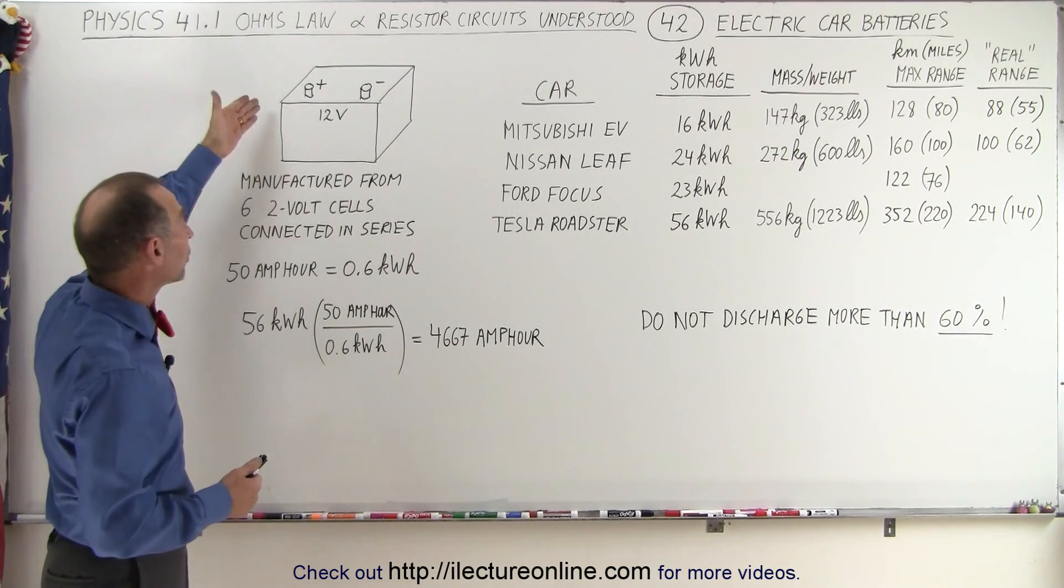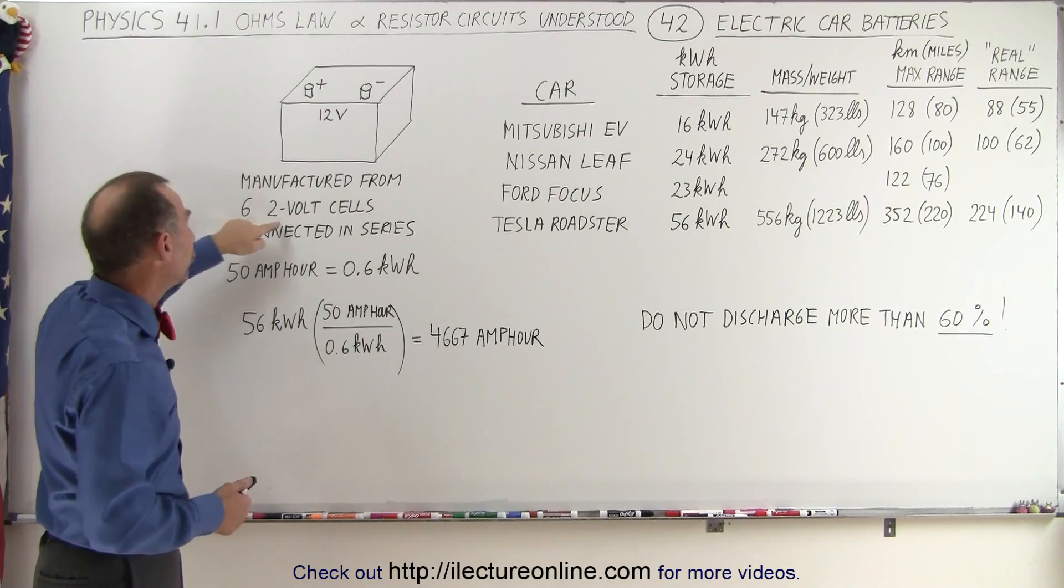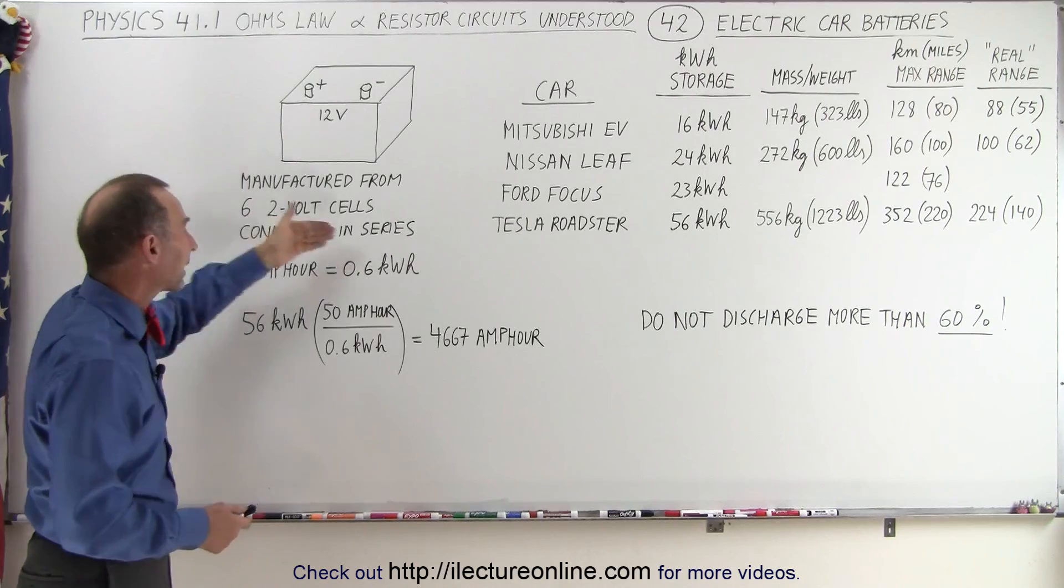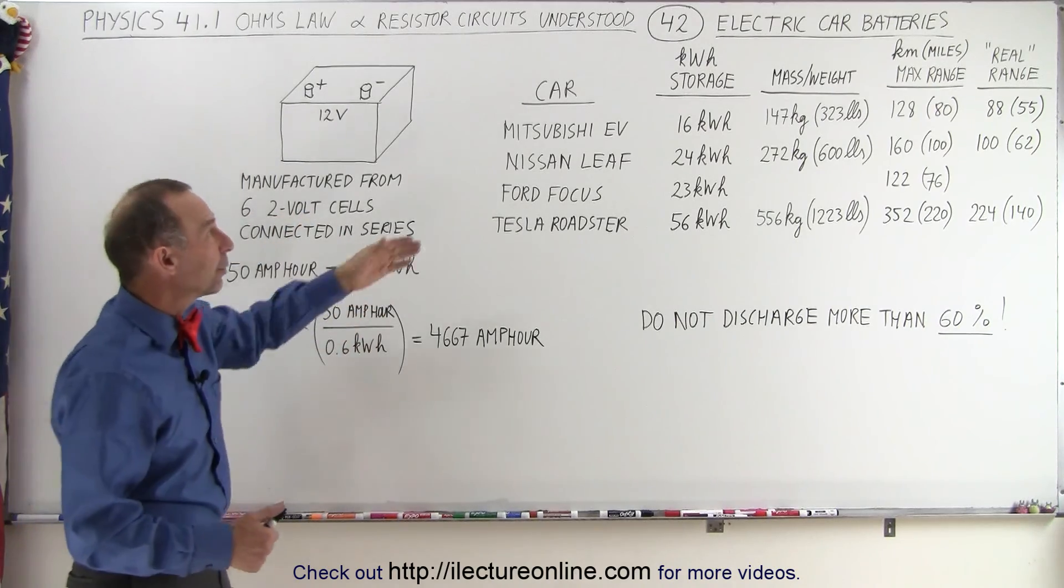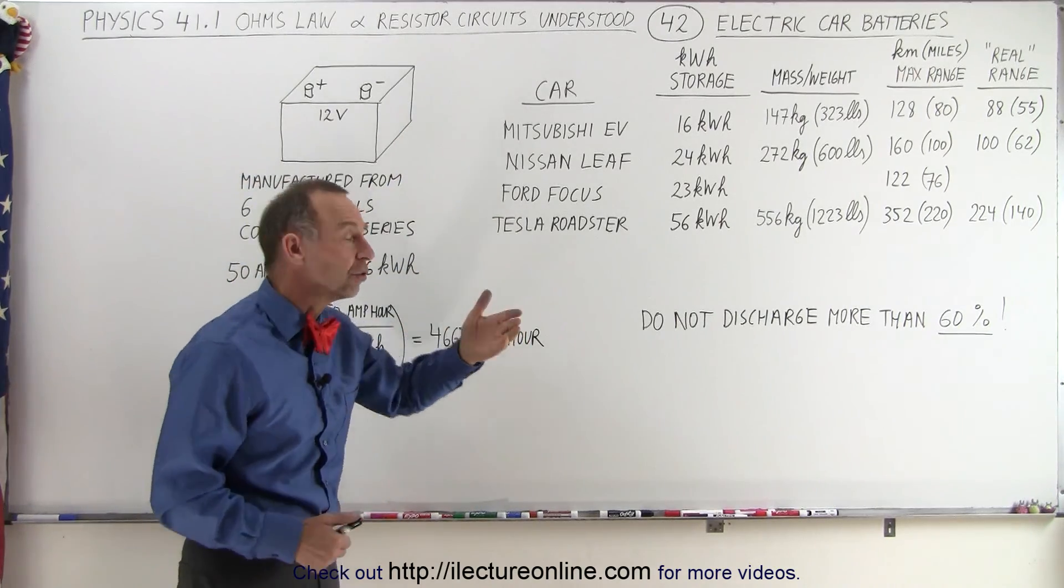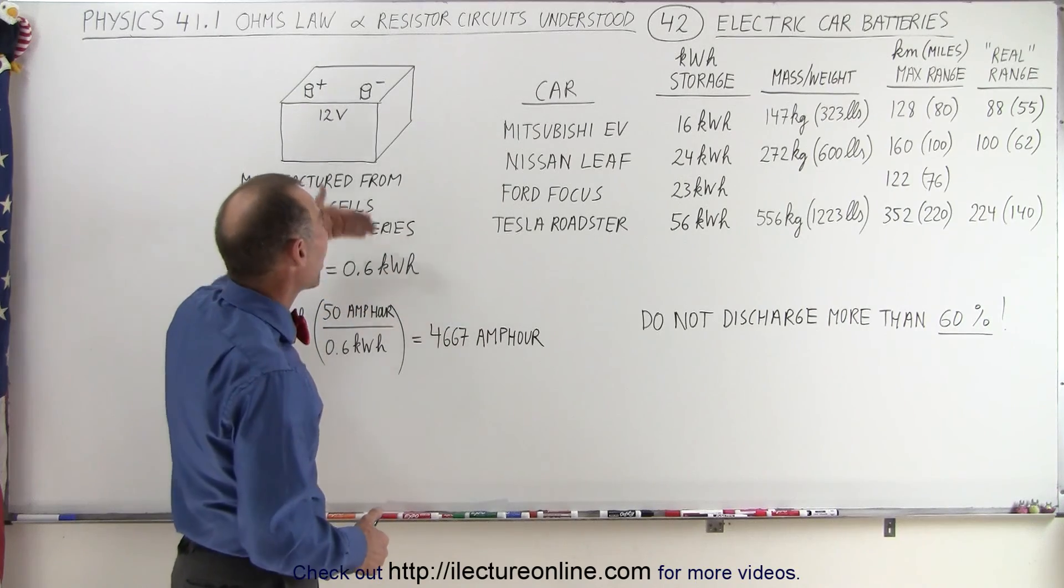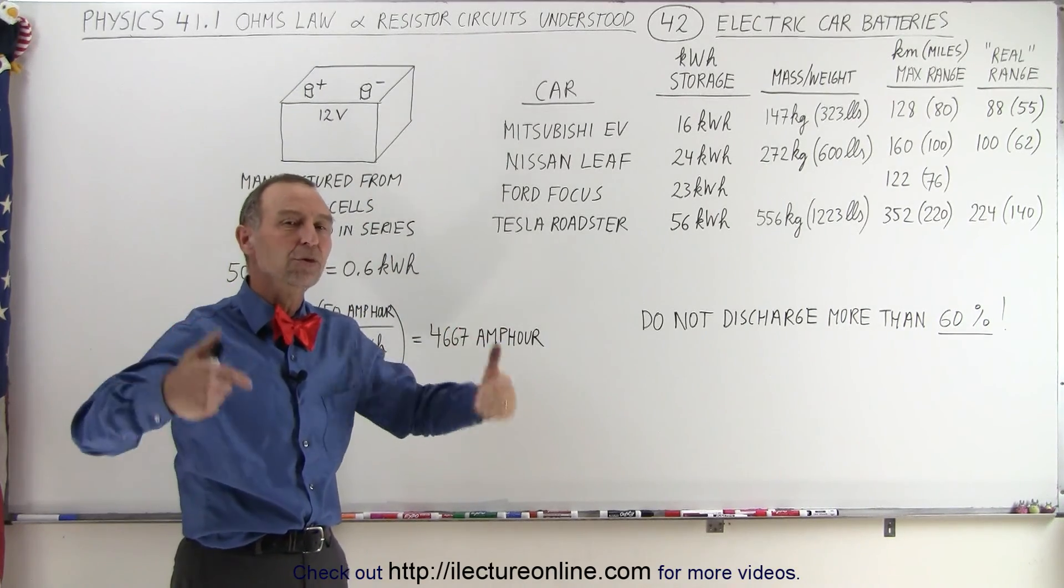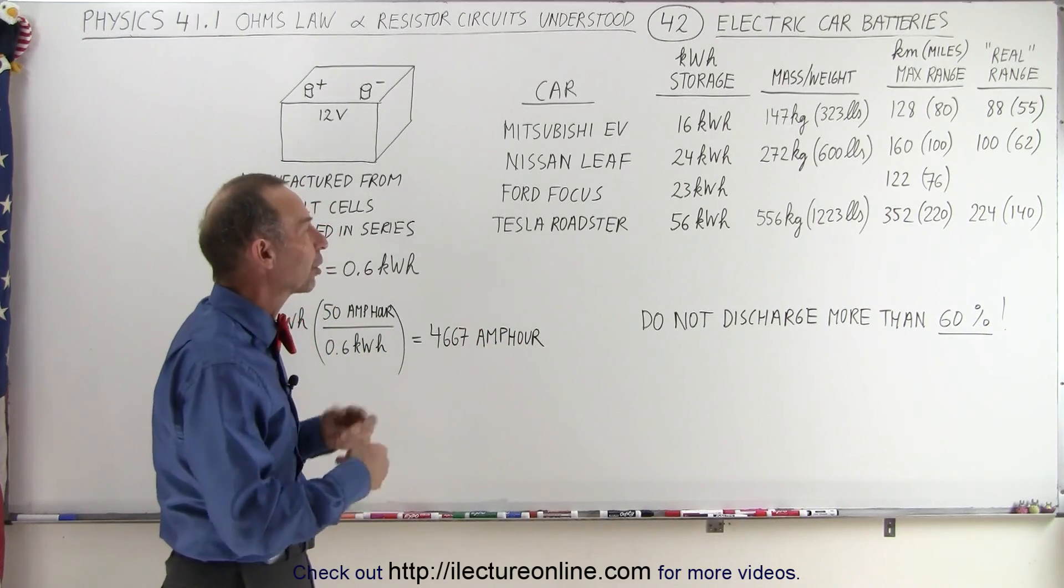Now, a typical car battery is made from 2 volt cells. So they use 6 2-volt cells to come up with 12 volts, and they're all connected in series. Now batteries that are used for electric cars, they don't build up to much higher voltage, they just put a lot of these batteries in parallel so they can produce an enormous amount of current to keep the car moving.